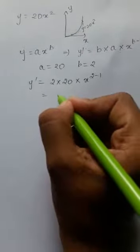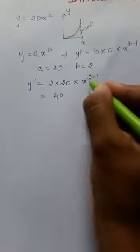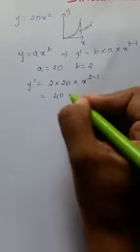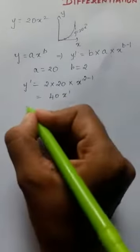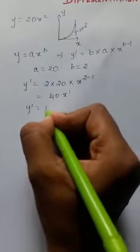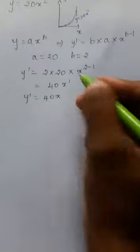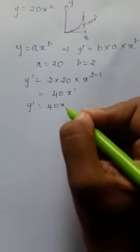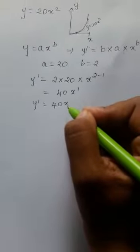2 into 20 is 40x to the power 2 minus 1 is 1, so x to the power 1. My y dash will be 40x because anything to the power 1 will be the same. So my derivative is 40x.